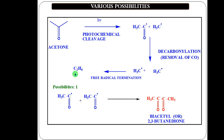Other possibilities are expected in Norrish type 1 reactions. Because we are handling free radicals, once the free radical mechanism takes place, we expect three types of reactions: initiation of the radical, meaning generation of free radicals from the carbonyl group upon photochemical reaction; propagation; and termination.